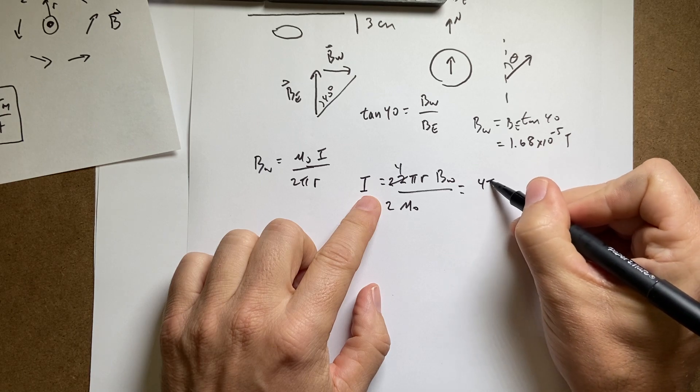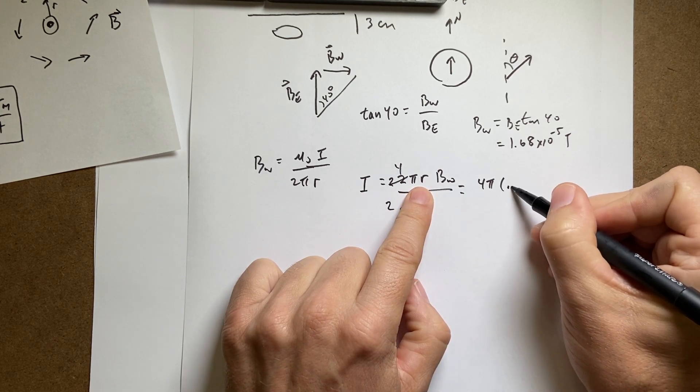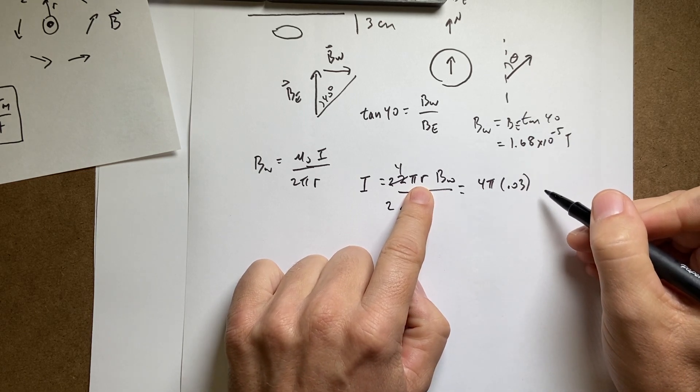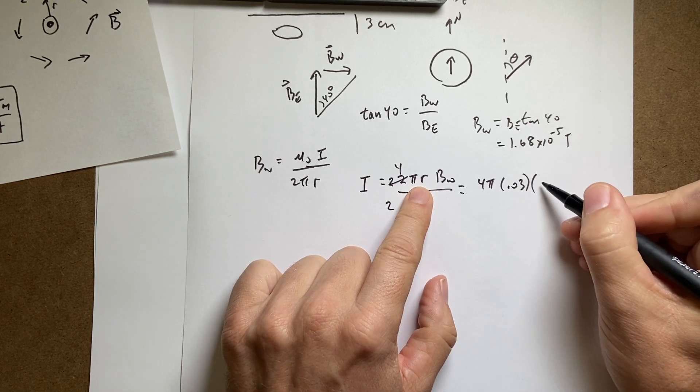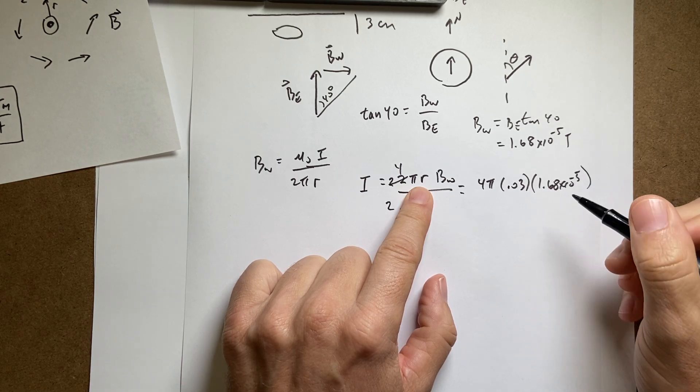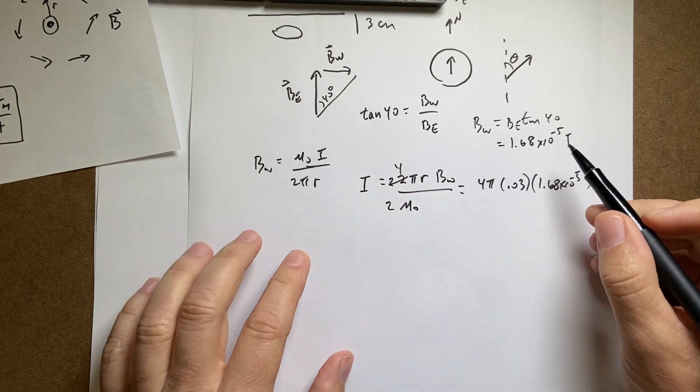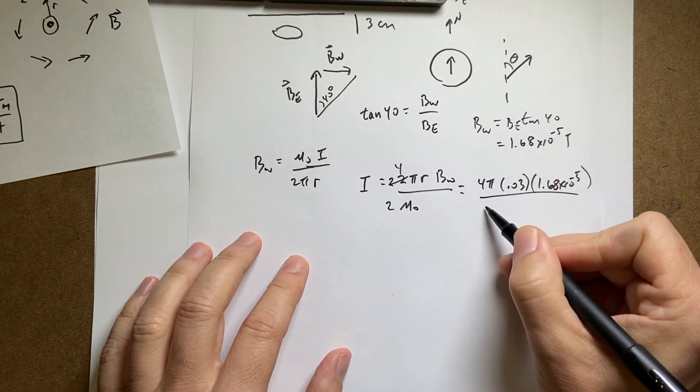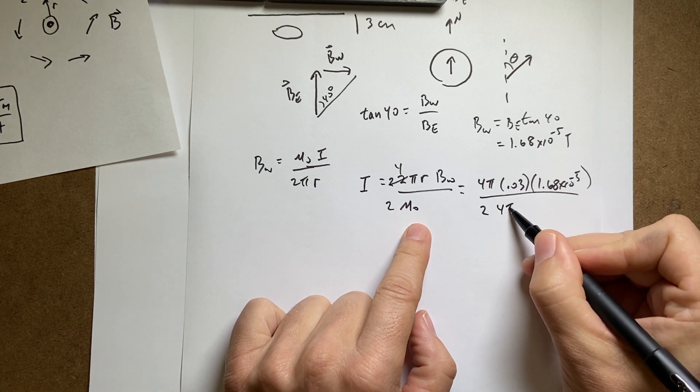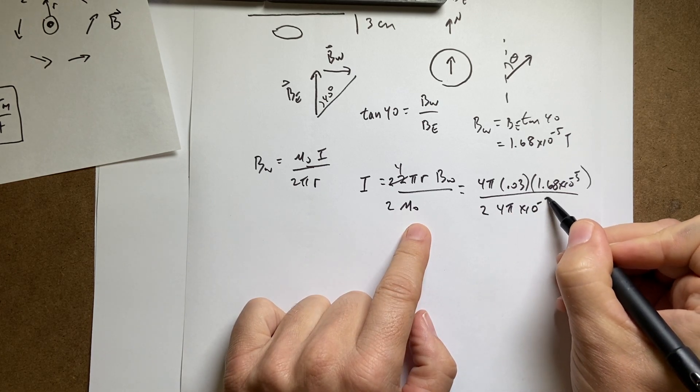Then I have r, which is going to be .03. It was 3 centimeters. So I got to convert that to meters. And I'm leaving off the units for saving space. 1.68 times 10 to the negative 5th. That is the magnetic field. And then I'm going to divide by 2 times mu naught, which is 4 pi times 10 to the negative 7th.